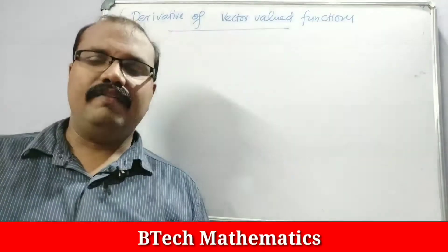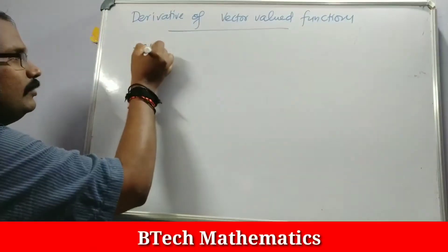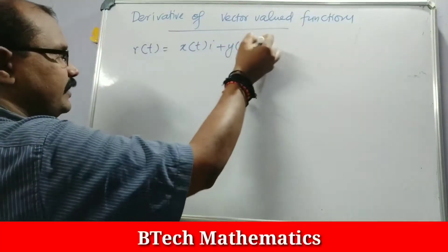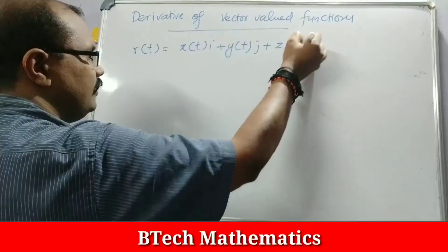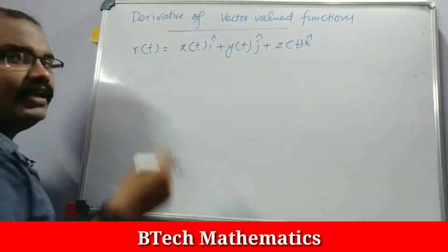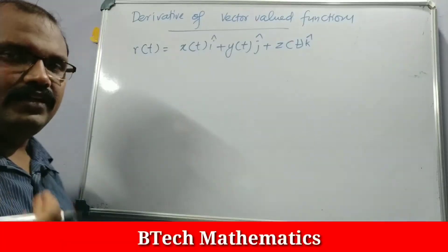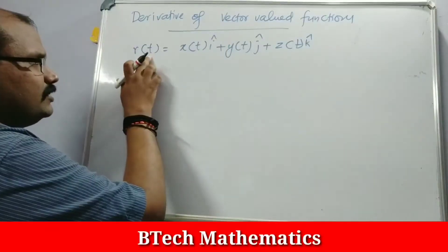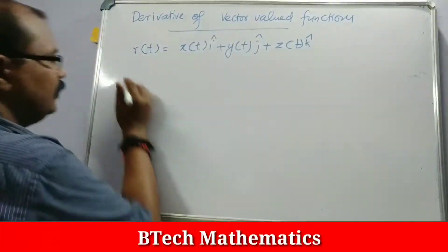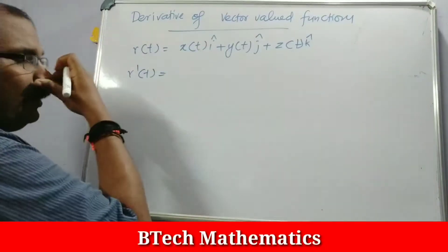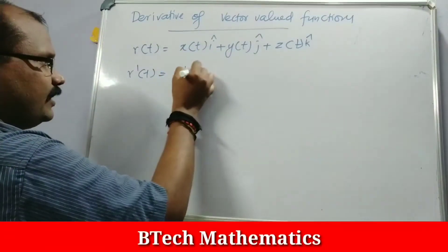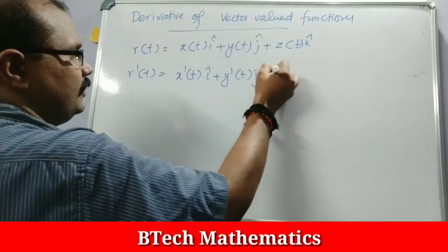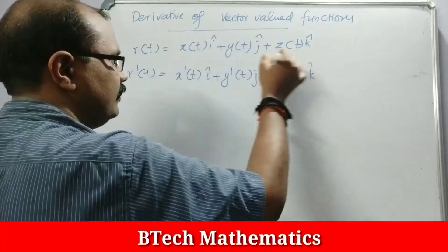If you have a Vector Valued Function R of T equal to X of T i plus Y of T j plus Z of T k, the derivative with respect to T is computed component-wise. R dash of T equals X dash of T i plus Y dash of T j plus Z dash of T k. This is the derivative.